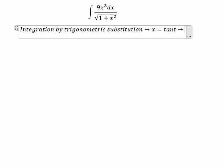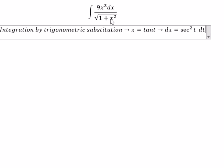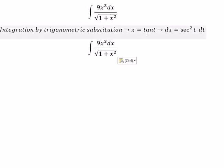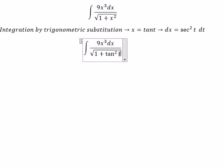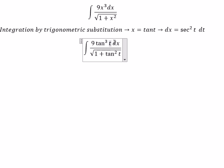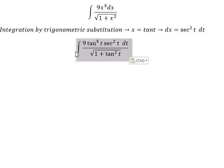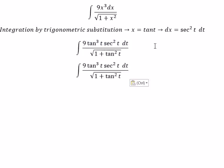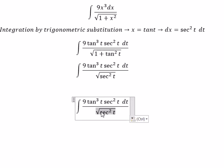We put x equal to tan t, so dx equals sec squared t dt. We substitute this into the integral — we change ds for sec squared t. The square root of sec squared t gives us sec t.